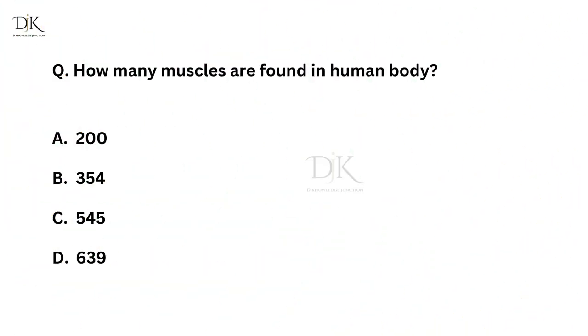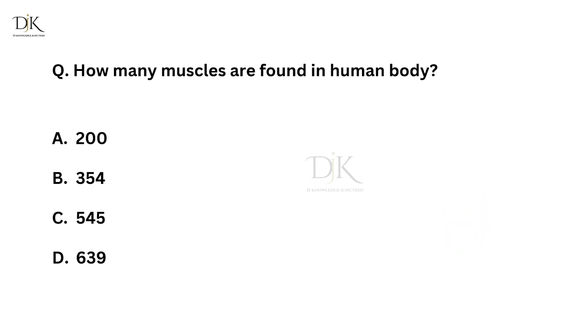How many muscles are found in the human body? Right answer is 639.